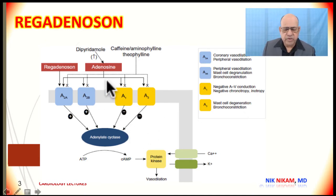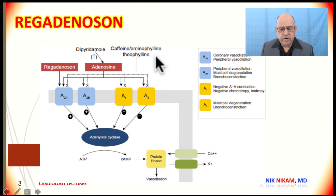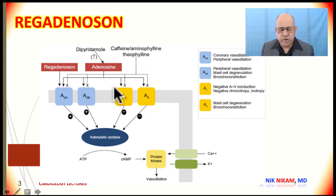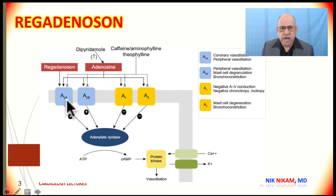Now let us look at some other drugs used in nuclear stress tests to increase coronary blood flow. The oldest of which is dipyridamole. Dipyridamole is converted into adenosine in the body, and this adenosine acts on all the adenosine receptors — adenosine 1, adenosine 2, and adenosine 3 receptors — activating the A2A, A2B, A1, and A3 receptors.